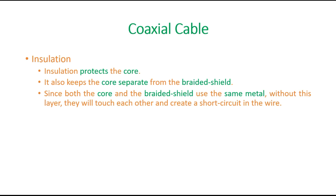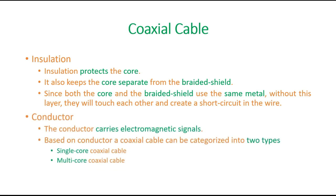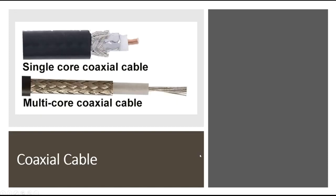The braided shield is built from the same metal used to build the conductor. The insulation layer protects the core and keeps it separate from the braided shield. Since both the core and braided shield use the same metal, without this layer they would touch each other and create a short circuit. The conductor is the innermost part, which carries the electromagnetic signals.